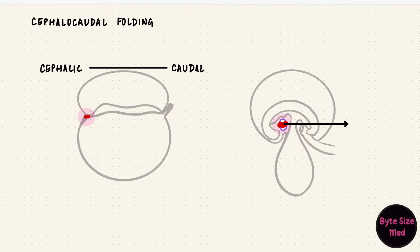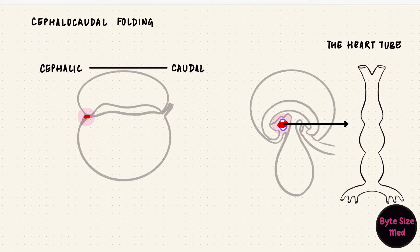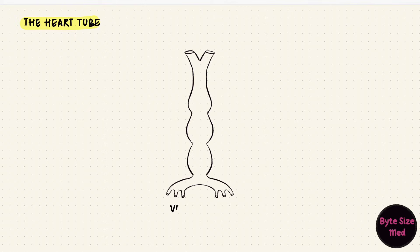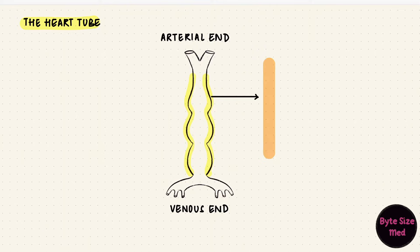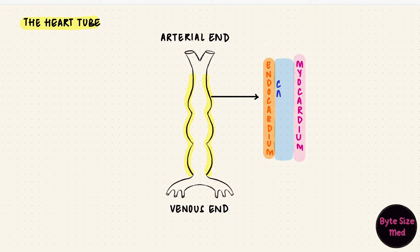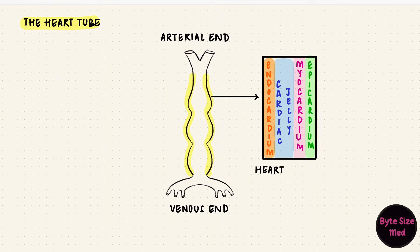Now we'll pick up that heart tube and reorient it to look at it vertically. It has a venous end and an arterial end. The heart tube was a vessel with endothelium — that endothelial lining forms the endocardium. It was surrounded by cardiac myoblasts, and they form the myocardial layer. The myocardium produces a specialized connective tissue which separates the two layers, called the cardiac jelly. The outer epicardial layer, which is the visceral layer of the pericardium, is formed by migration of mesothelial cells which then cover the myocardium.